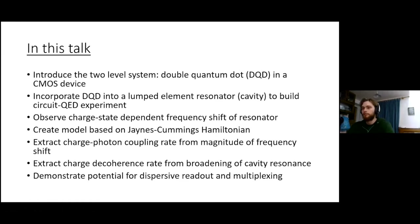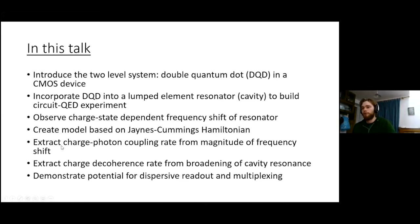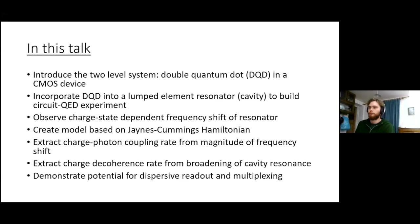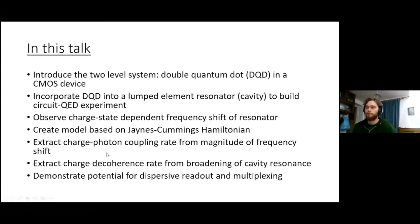We model this with a Jaynes-Cummings Hamiltonian and use this model to extract a charge-photon coupling rate. We also observe quite fast charge decoherence in this model. Finally, we do readout of the charge state and demonstrate that what we've built can read out very quickly and is compatible with multiplexing.